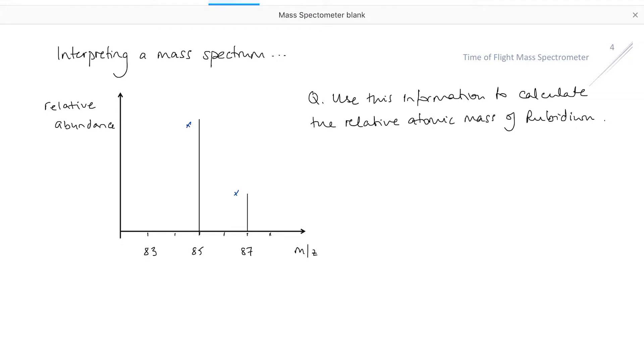Remember that this bottom axis, the x-axis, essentially gives us the mass of each isotope because we are assuming that the charge z is always plus one.